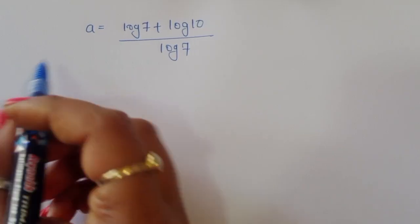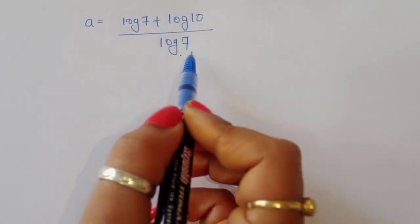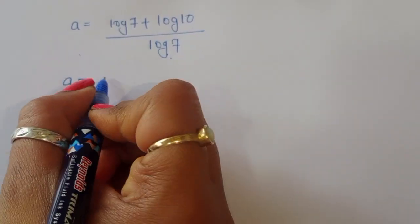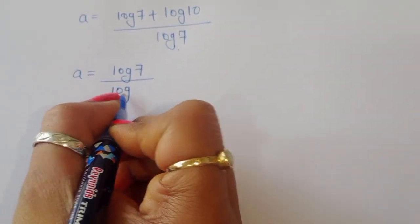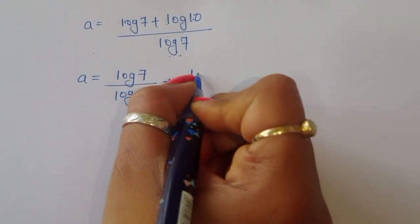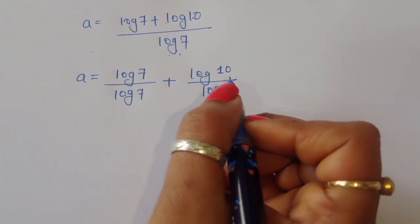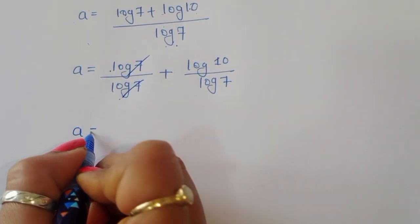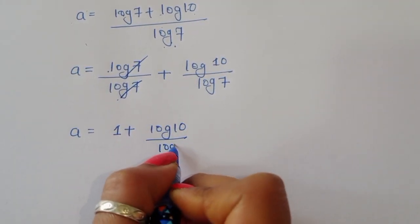Now we separate the terms. A is equal to log of 7 divided by log of 7, plus log of 10 divided by log of 7. Since log 7 divided by log 7 cancels to 1, we get A is equal to 1 plus log of 10 divided by log of 7.